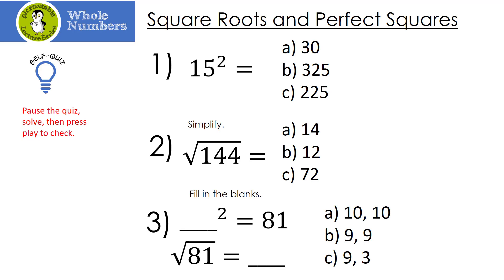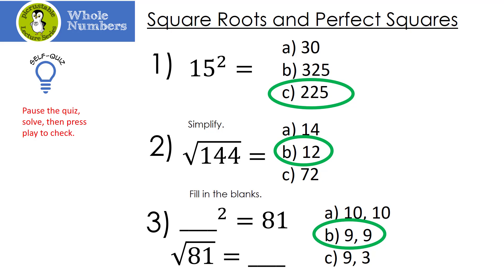Let's do this quiz. Pause, solve, then press play to check — no peeking! Let's look at the first one: 15 squared. Did you get 225? What about the square root of 144? That's 12. For the fill-in-the-blanks, the first one is 9 because 9 squared is 81 and the square root of 81 is 9.